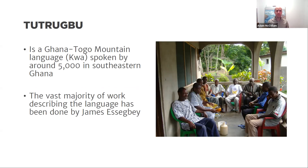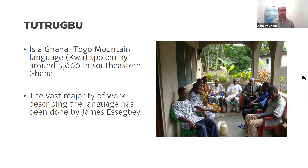Tutrugbu is a Ghana-Togo Mountain language spoken by around 5,000 people in southeastern Ghana. The vast majority of the descriptive work has been done by my collaborator James Segbe. I came in on this project when working on my master's, and James has done the lion's share of the work — he deserves the credit for finding and describing the wonderful things going on here.